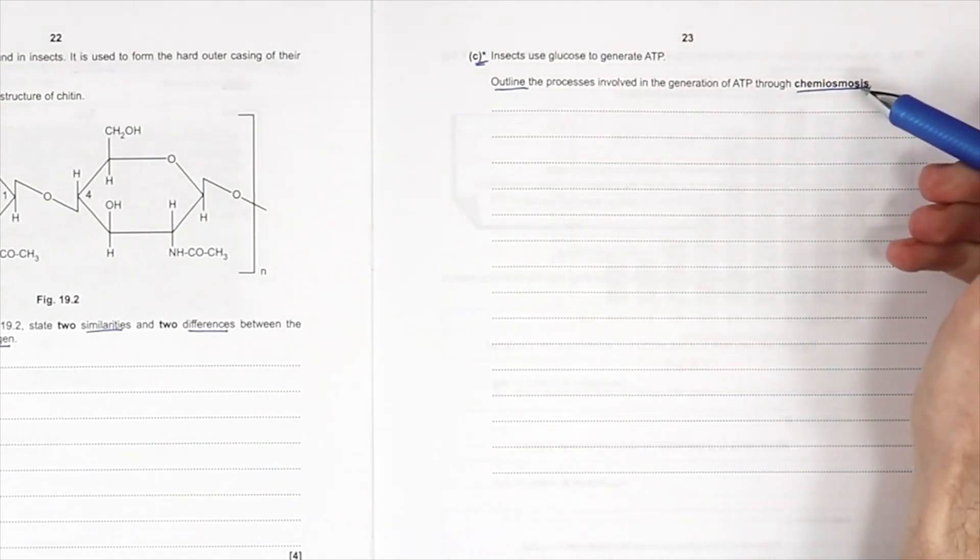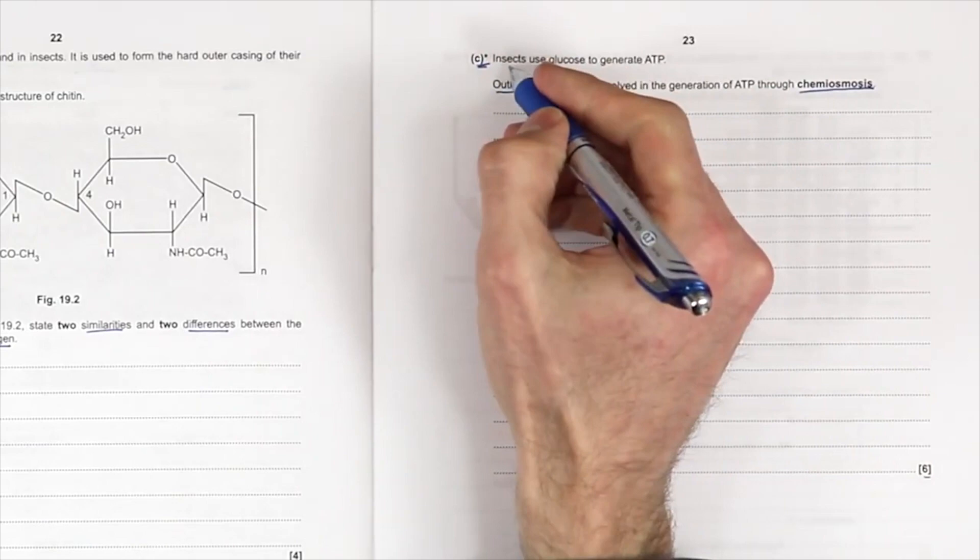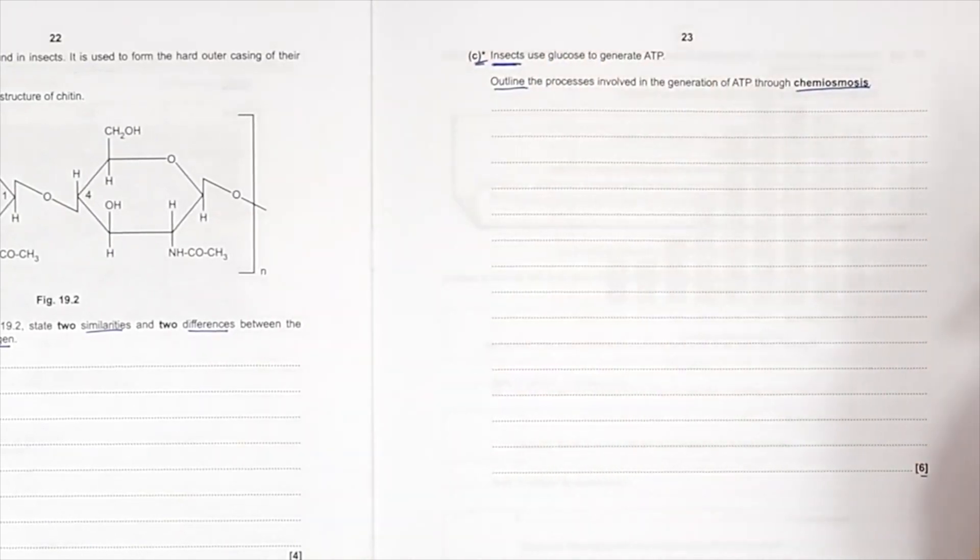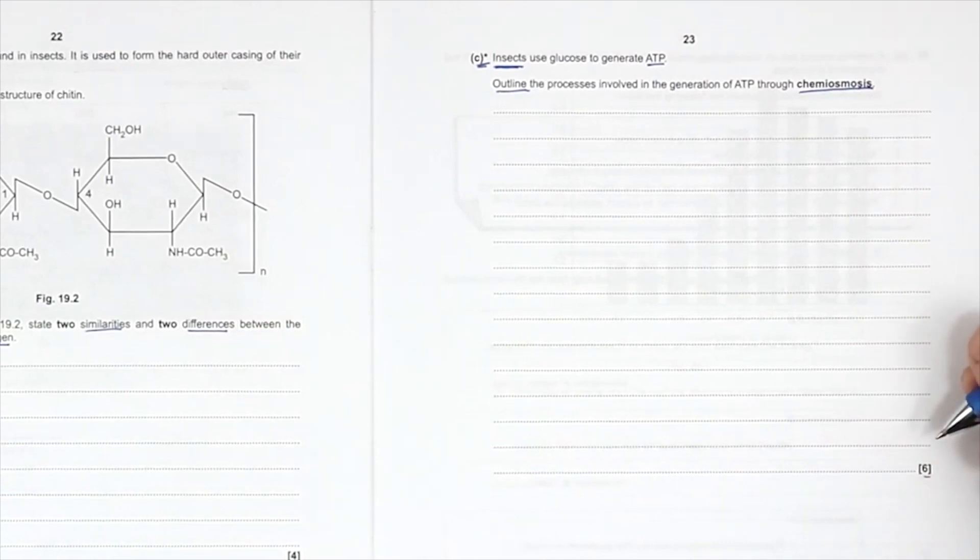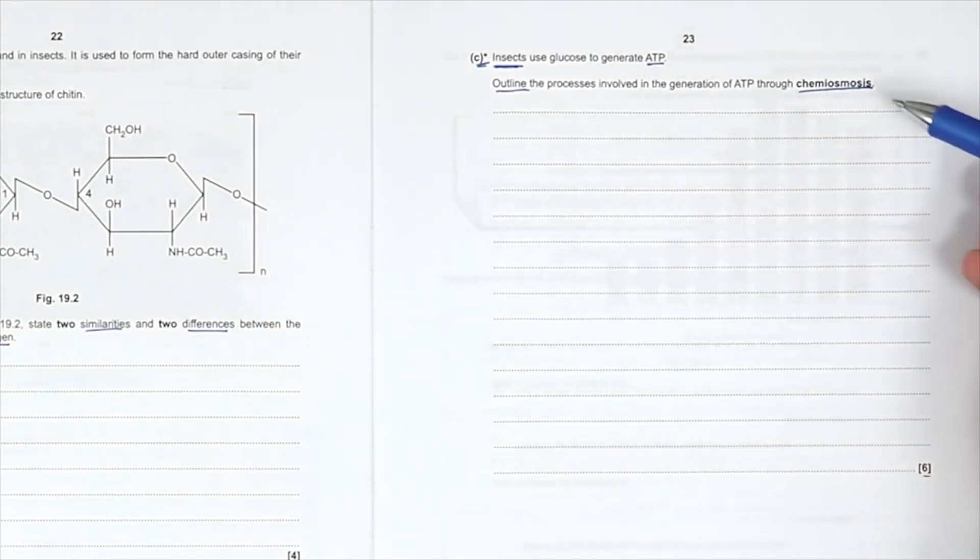Now, I wouldn't mention chemiosmosis in the light-dependent reaction of, could we clearly talk about insects here? So this is a very nice question. Basically, where is chemiosmosis involved?